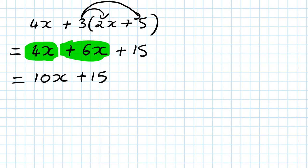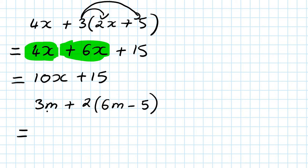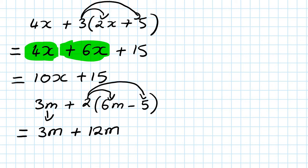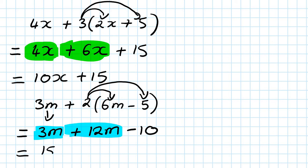Next one: 3m plus 2, open bracket, 6m minus 5. I copy the 3m, then remove the bracket: 2 times 6m is 12m, and 2 times negative 5 — positive times negative gives negative 10. Now collect like terms: 3m plus 12m is 15m, and minus 10 stays. So the answer is 15m minus 10.